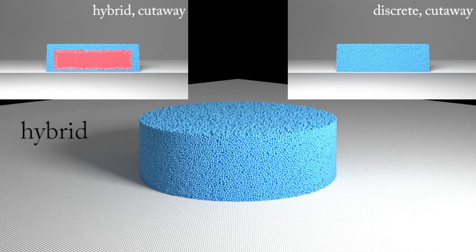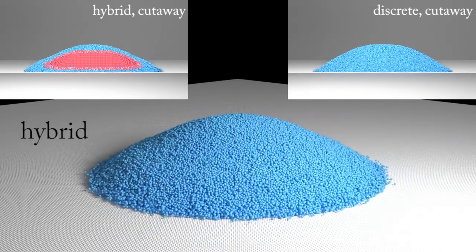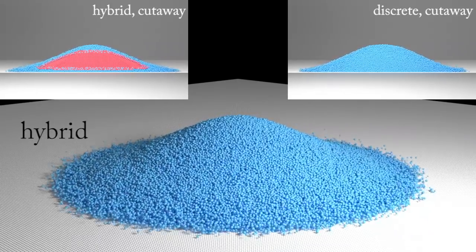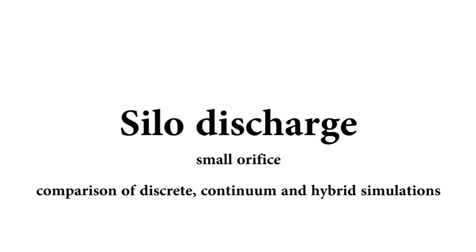We simulate a collapsing column of grains with both a purely discrete method and with our hybrid approach. Note the correspondence between the shapes of both piles. Further observe that our hybrid method is able to capture detailed flyaway effects.